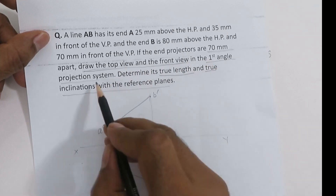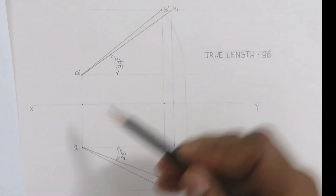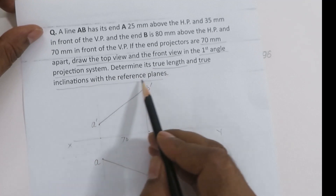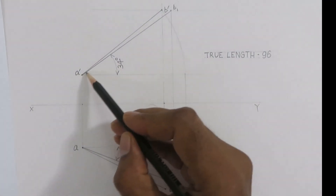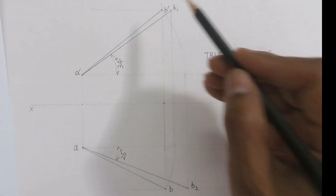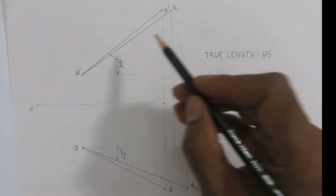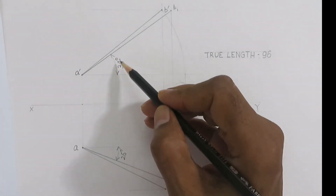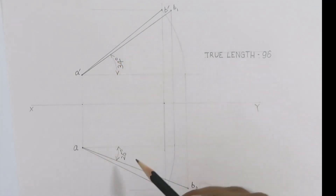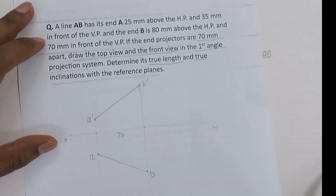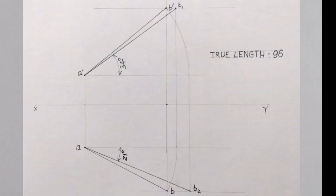To summarize: we drew the top view and front view in the first angle projection system. We then determined the true length, which is 96mm. The true inclination of the line with the HP is 34 degrees and with the VP is 26 degrees. Thank you for your attention — please like this video and subscribe to this channel.